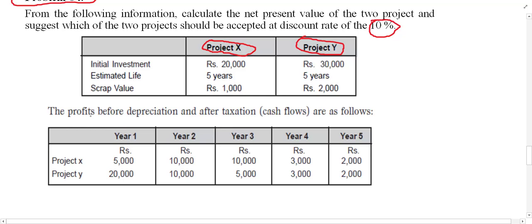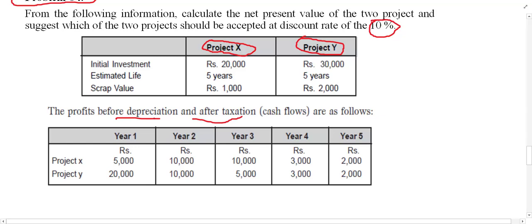The remaining information is the profit before depreciation and after tax. Since it is before depreciation and after tax, there is no need for adjustment. The good thing in this example is that no adjustment of inflows is required. The inflows are given for Year 1 through Year 5 for both Project X and Project Y.